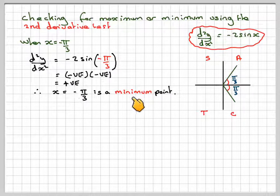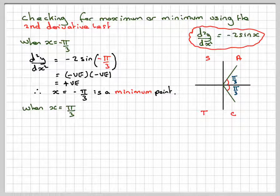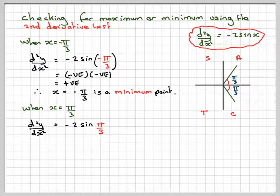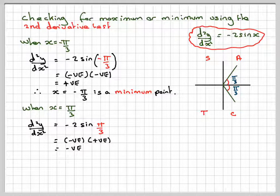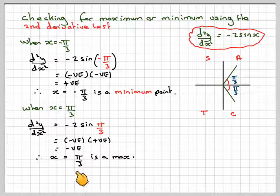Remember: if the second derivative is positive, it's a minimum; if it's negative, it's a maximum. Repeating for x equals pi over 3: the second derivative is minus 2 sin(pi over 3). Minus 2 is negative, and sine of pi over 3 is in the first quadrant so it's positive — negative times positive gives a negative, which means x equals pi over 3 is a maximum point.